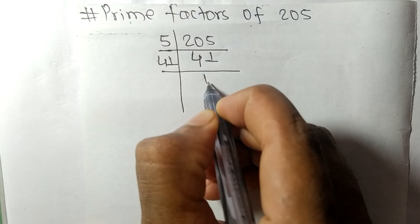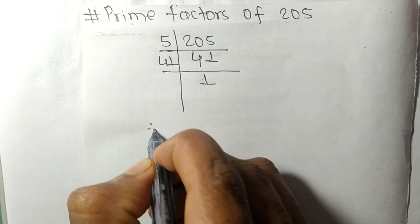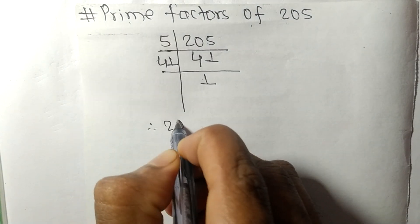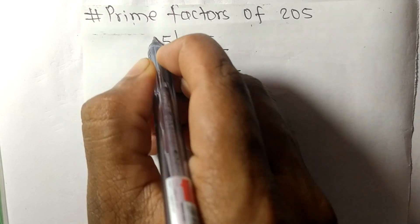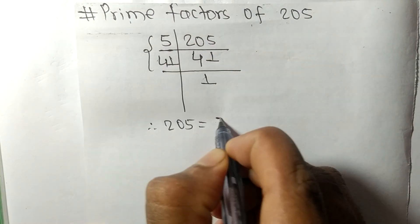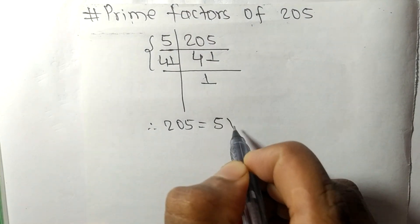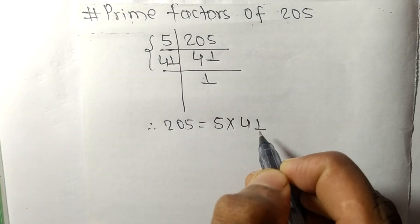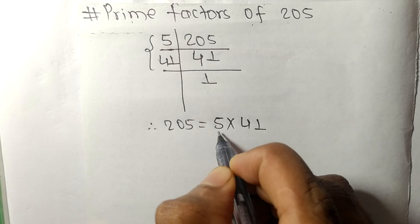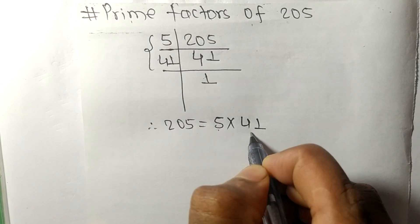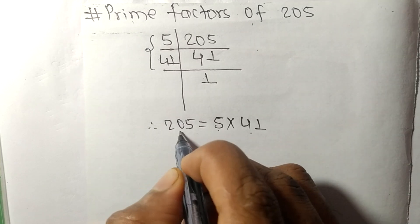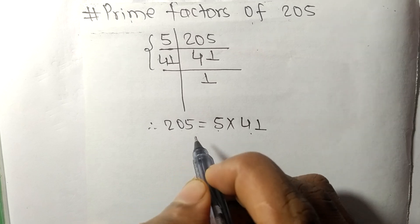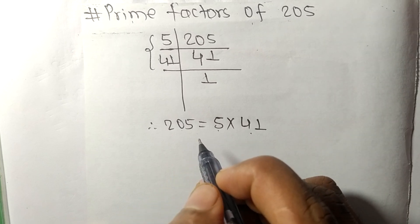So 205 is equal to 5 times 41, and therefore 5 and 41 are the prime factors of 205. That's all for today — thanks for watching.